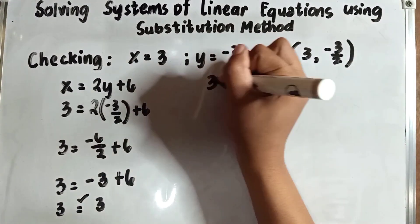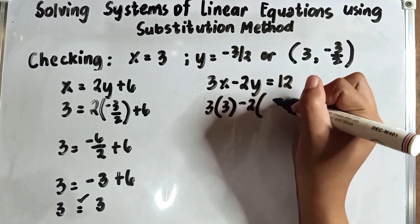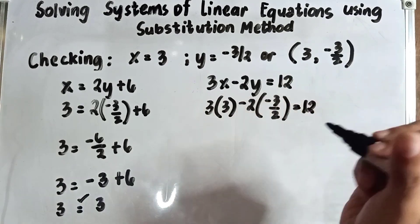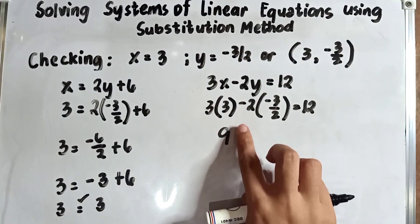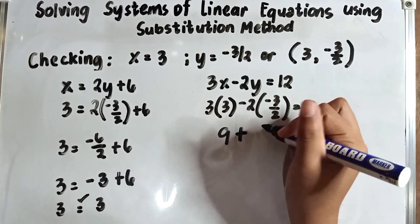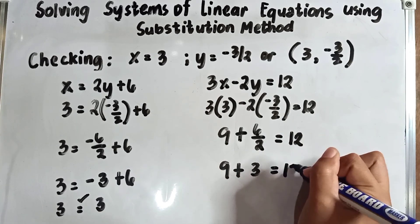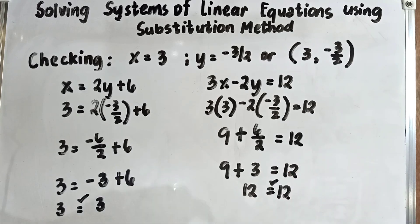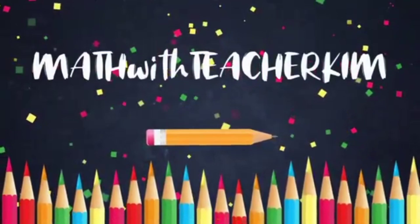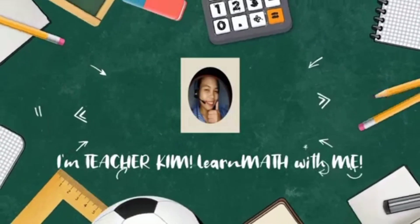Checking equation 2, 3x minus 2y equals 12: substituting x equals 3 and y equals negative 3 over 2, we get 3 times 3 minus 2 times negative 3 over 2 equals 12. That gives 9 plus positive 6 over 2, which is 9 plus 3, equaling 12. So 12 equals 12 — our answer is correct.